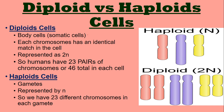Haploid cells are your gametes — those sex cells — and we represent them by N because they have half the number of chromosomes as diploids. The prefix 'di-' means two, and 'haploid' sounds like 'half.' In humans, our gametes only have 23 chromosomes, because that is half the number in our diploids. Each species has a different number of chromosomes in their diploids and haploids.